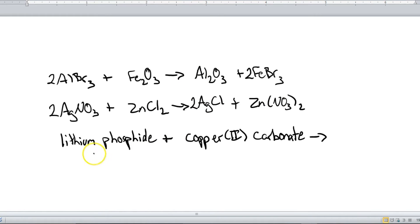Next example. This time we're going to take the name and write the formulas first and then predict the products. So lithium phosphide. That is lithium and phosphorus. Lithium is a charge of plus one. Phosphorus is a charge of negative three, so this is Li3P. Plus, and then we got copper two carbonate. Copper is Cu, with a charge of plus two. Carbonate is CO3, with a charge of negative two, so they already add up. So we've got those, and now let's predict those products.